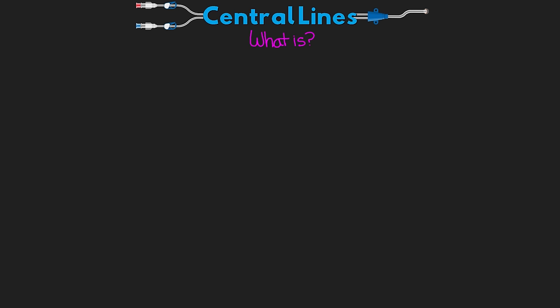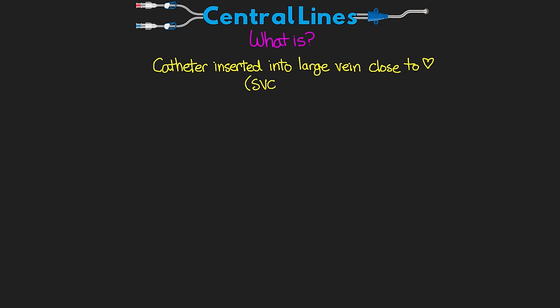Since many of our patients will often have a central line, it is important to understand them. There are different types of lines for different purposes and some key differences from peripheral IVs. A central line is essentially a catheter that's inserted into a large vein close to the heart, and this is generally going to be either the superior vena cava or the inferior vena cava. These catheters can either be a single channel — something we call a lumen — or they can have multiple lumens with potentially different purposes.